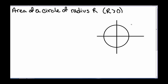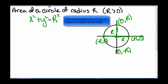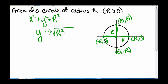We want to find the area of a circle with radius r, where r is greater than 0. So here we have our circle. Each one of these lengths is r. This point is going to be negative r, 0; this one is 0, negative r; this point is r, 0; and 0, r. From the circle equation, x squared plus y squared equals r squared, which means that y equals plus or minus the square root of r squared minus x squared.